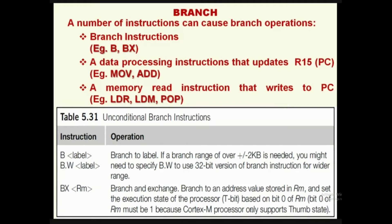Table 5.31 shows the unconditional branch instructions. 'B' denotes branch to a label — for example, 'branch loop' or 'branch loop1'. If the branch range exceeds plus or minus 2 KB, you need to specify 'B.W' to use the 32-bit version. Plus or minus 2 KB means a 4 KB range accessed with a 12-bit address. To access the full 32-bit address range, write the instruction as Branch with W (word branch), which uses the full 32-bit encoding.